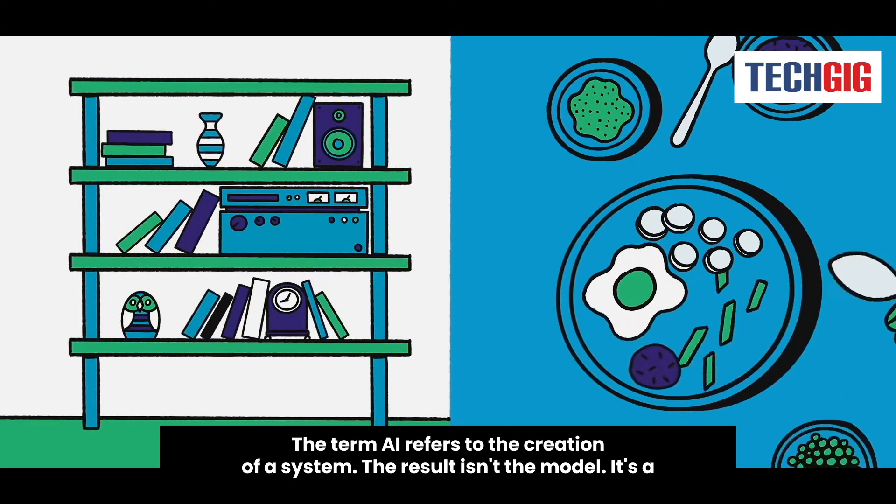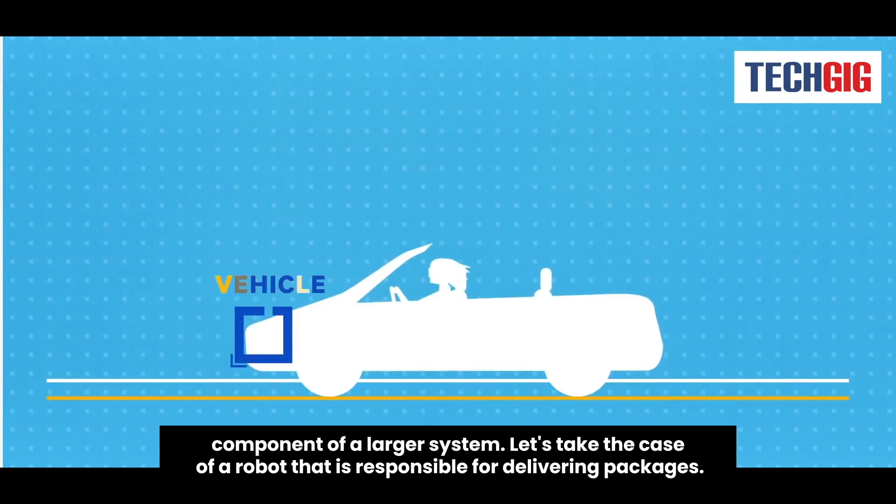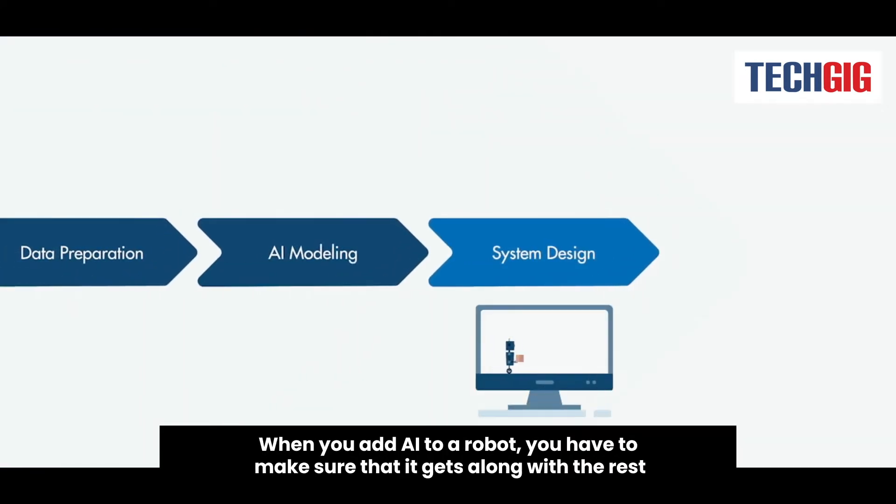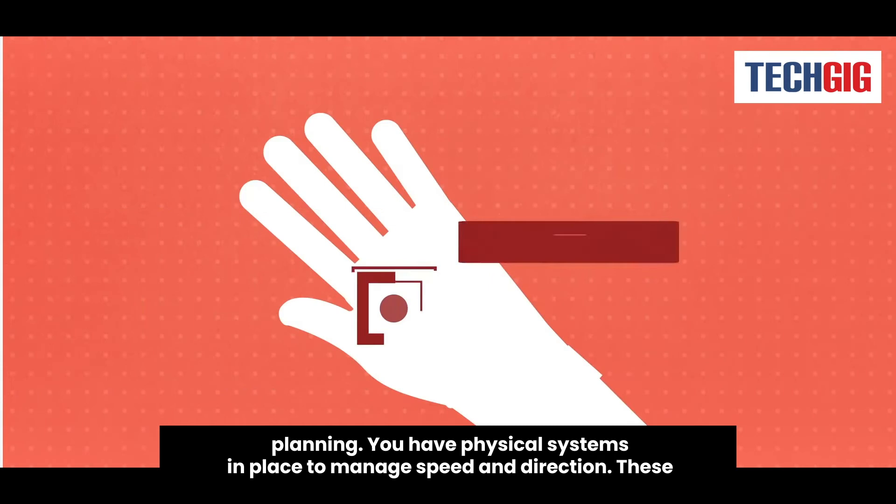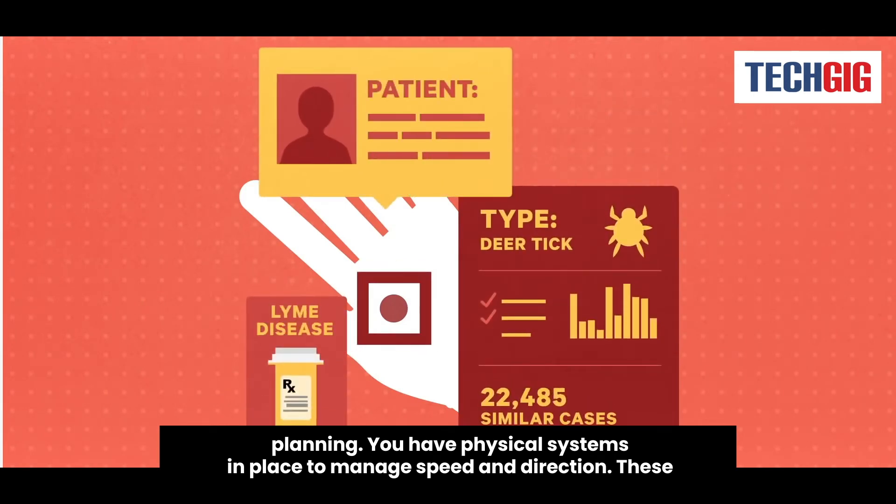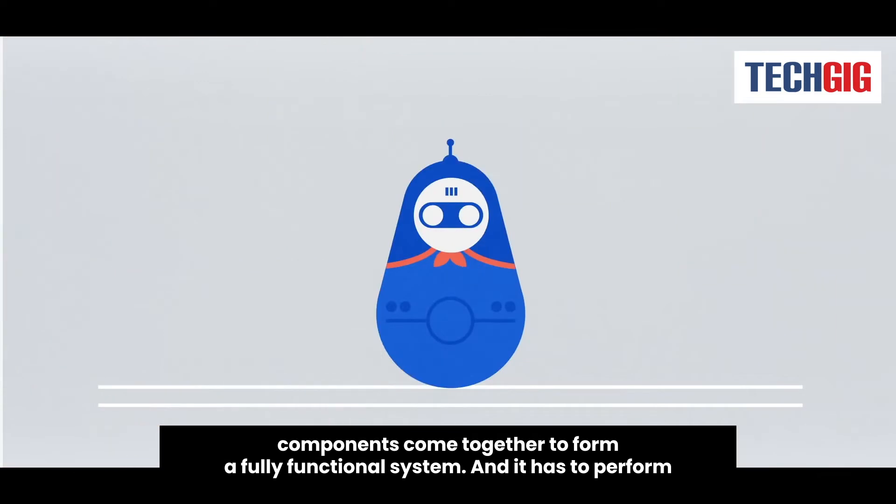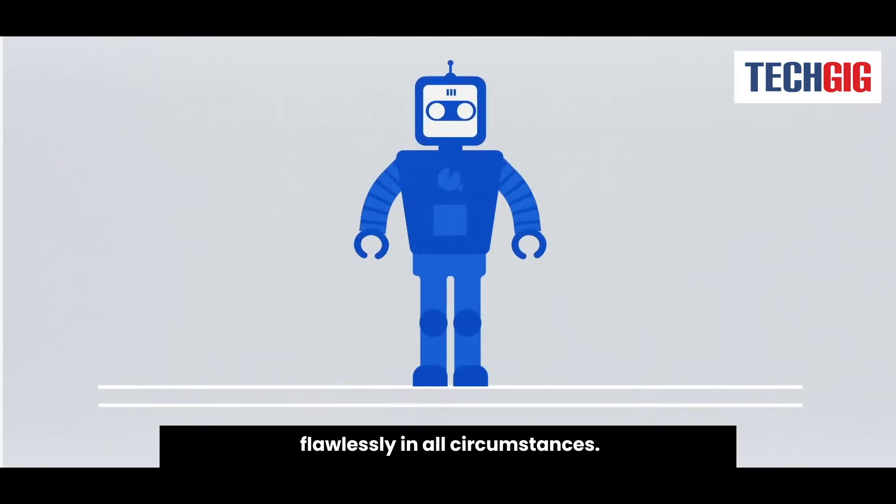The term AI refers to the creation of a system. The result isn't a model—it's a component of a larger system. Let's take the case of a robot that is responsible for delivering packages. When you add AI to a robot, you have to make sure that it gets along with the rest of the elements. Multiple sensors are used for perception, localization, and path planning. You have physical systems in place to manage speed and direction. These components come together to form a fully functional system, and it has to perform flawlessly in all circumstances.